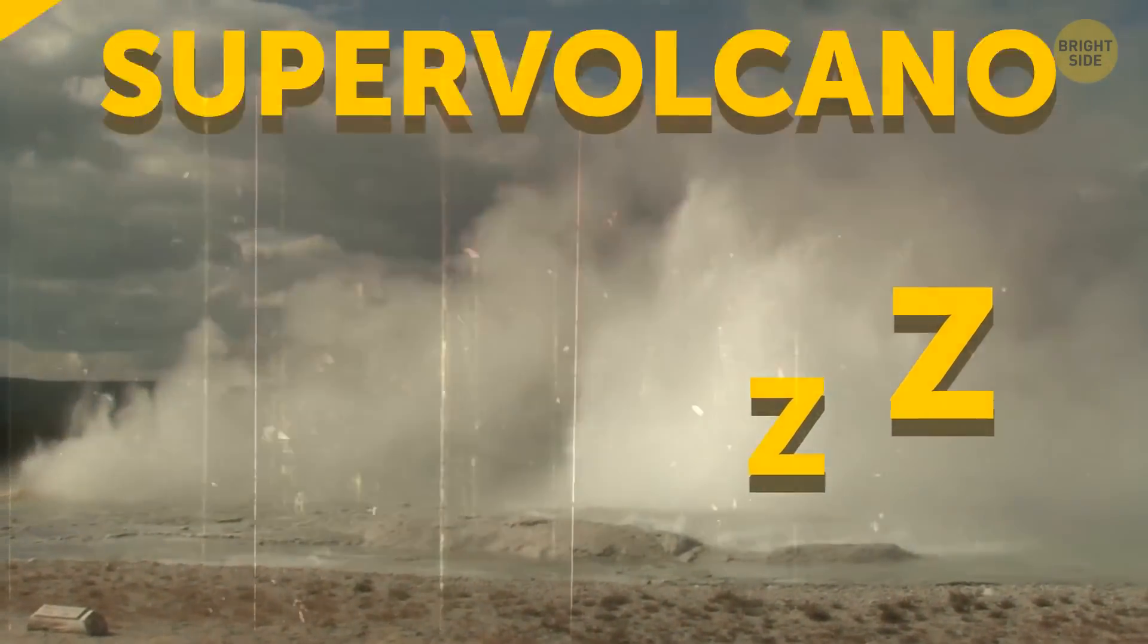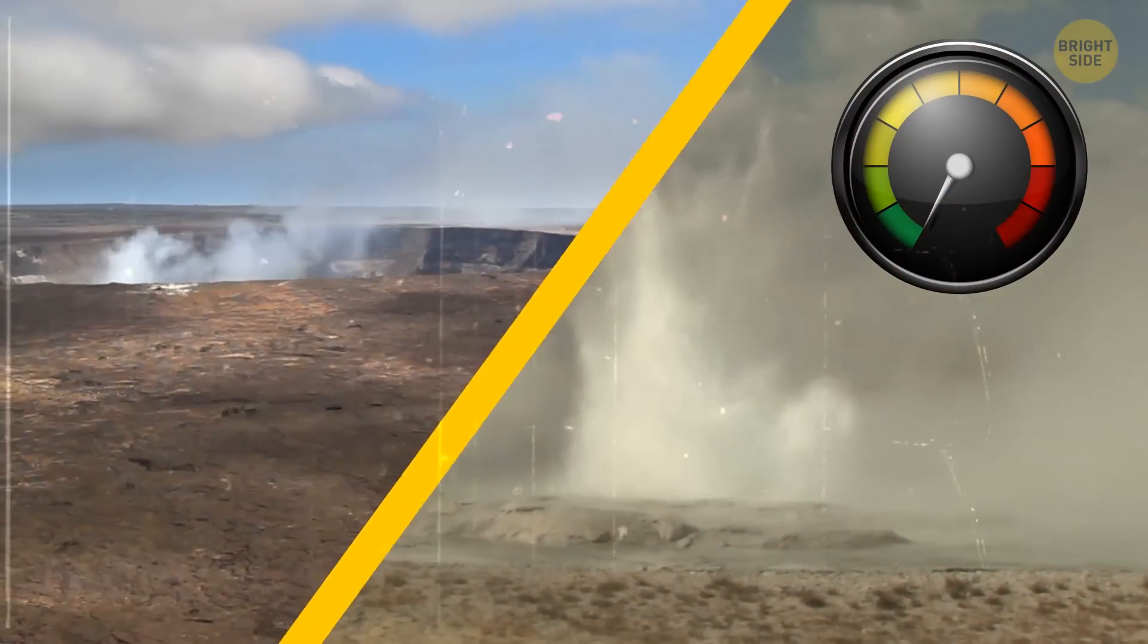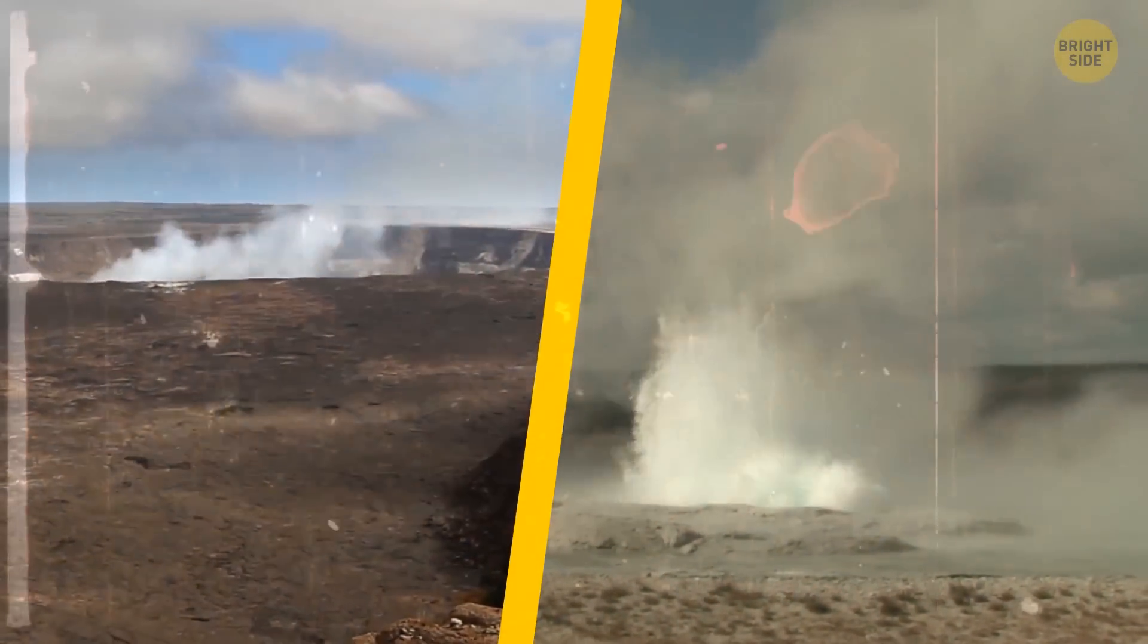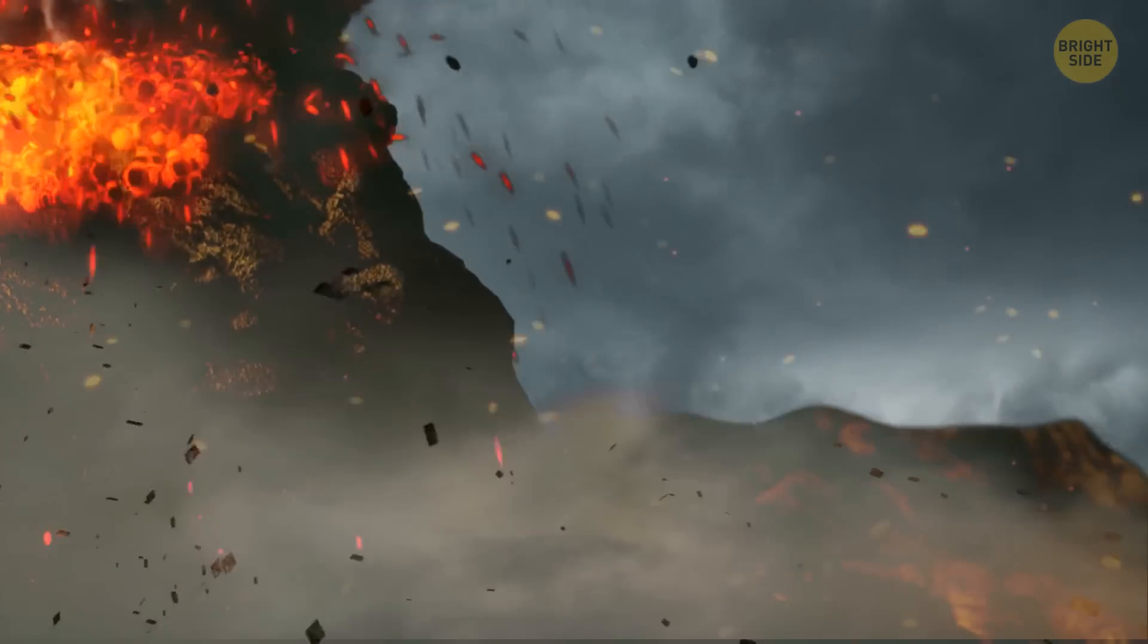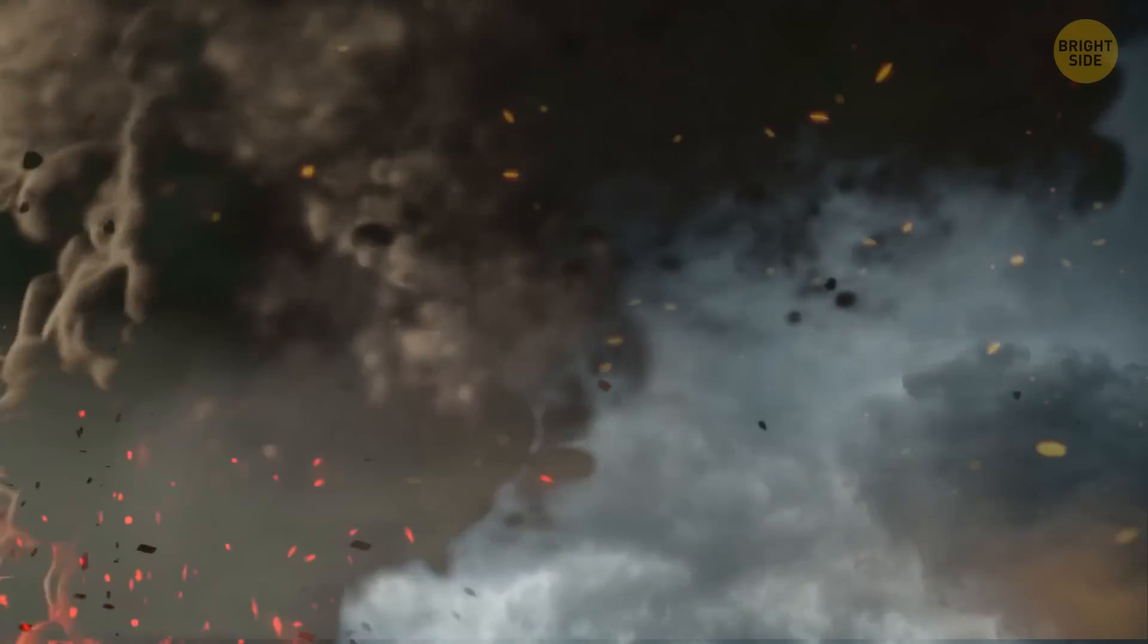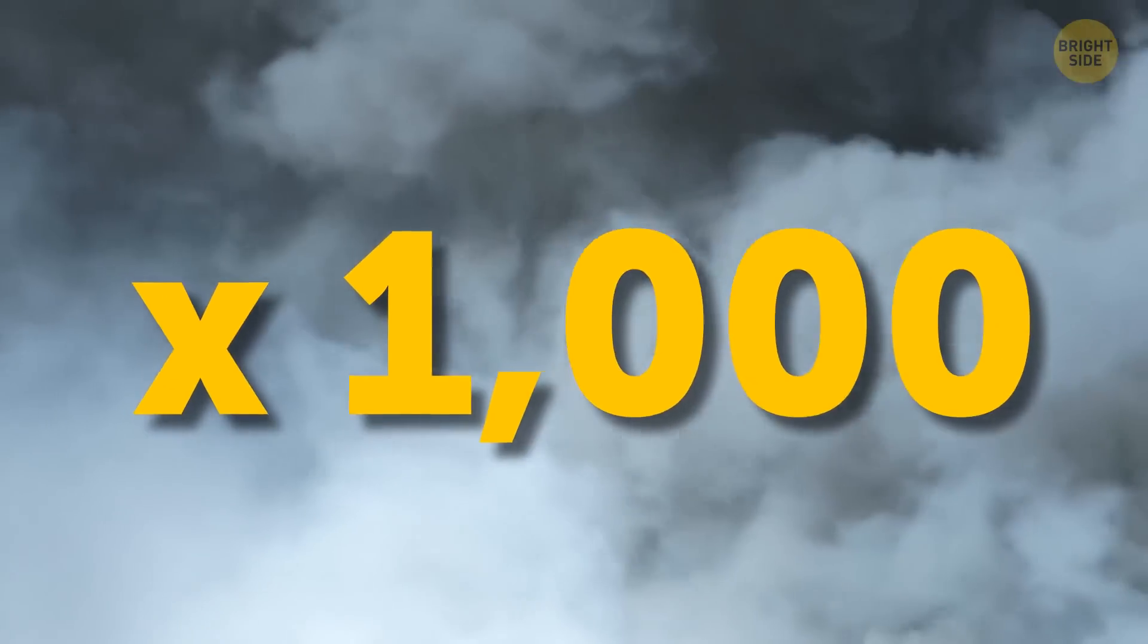The difference between a regular volcano, like Kilauea from earlier, and a supervolcano is that the latter is thousands of times more powerful. Imagine an eruption spewing tons of huge rock and rivers of hot lava, pumping out clouds of ash that make countries stop air travel for weeks. And now multiply all of this by a thousand.